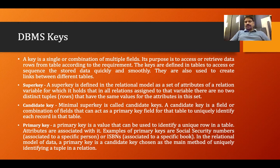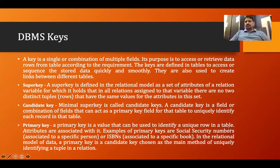The same property we saw with the super key applies here too. If we have roll number one in the table, we cannot enter roll number one again. If we have the data of roll number one, we cannot enter it again — because if two rows are identical, the primary key cannot uniquely identify the row.